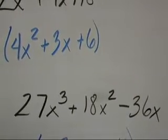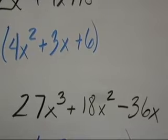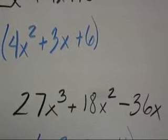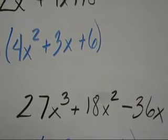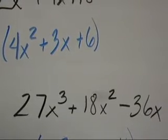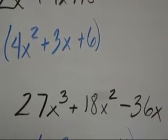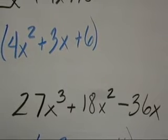27x cubed plus 18x squared minus 36x. What do 27, 18, and 36 all divide by? Make sure you found the greatest common factor, 9.